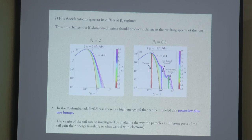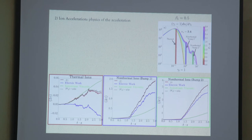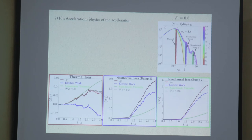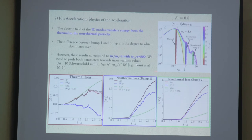We did the same analysis as for electrons: taking the thermal and non-thermal ion populations, we calculated the work done by the electric field associated with the ion cyclotron waves. For thermal ions, the work is negative — as with electrons. For the non-thermal cases, the work shown in blue is positive and dominant compared to the green line representing viscous heating. The non-thermal particles are mainly being energized by the electric field of the ion cyclotron waves, which get their energy from the thermal ions — very similar to what happens with electrons.